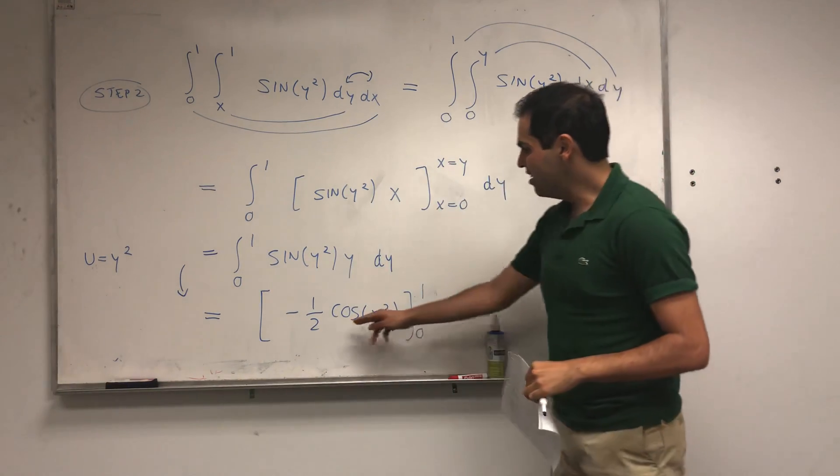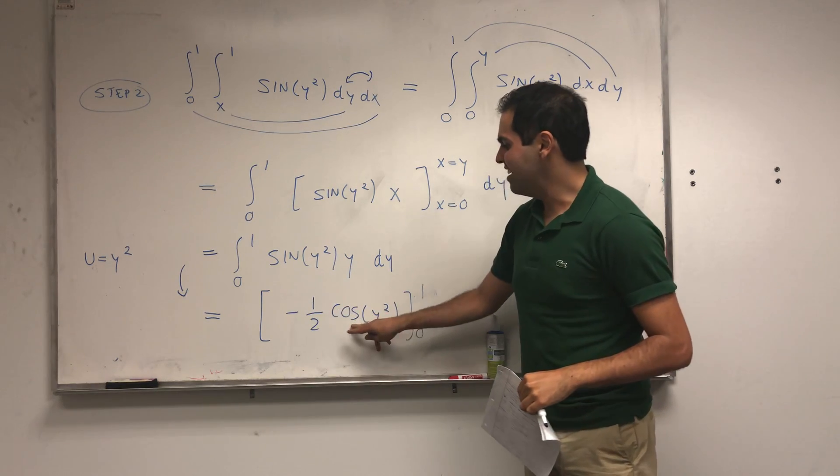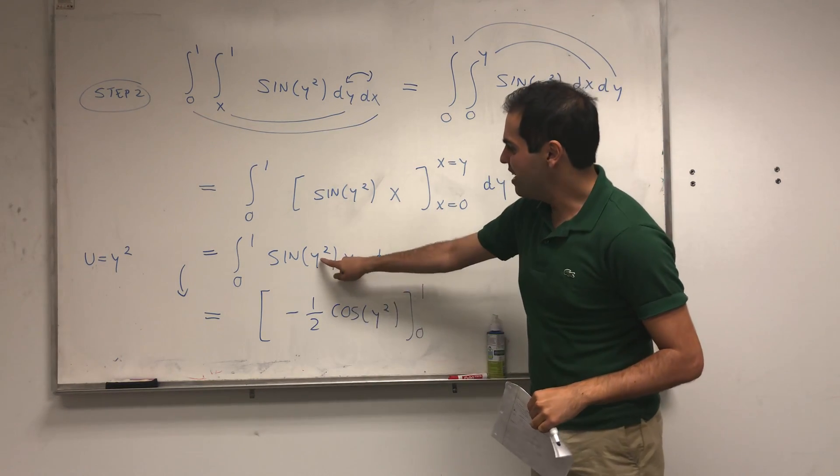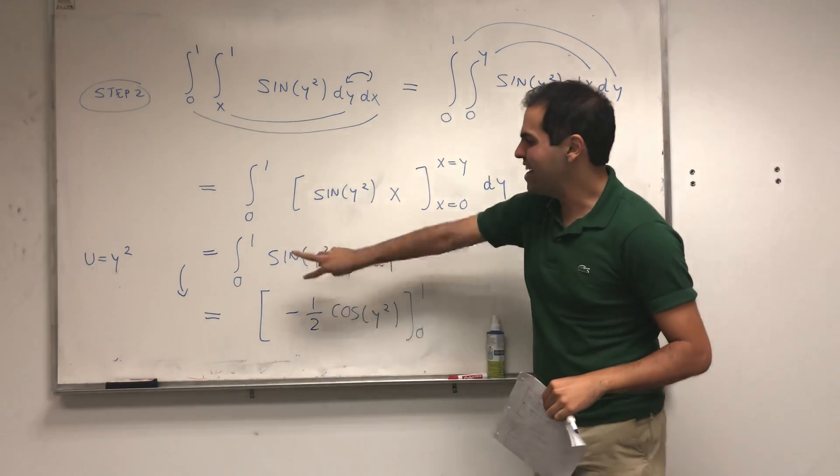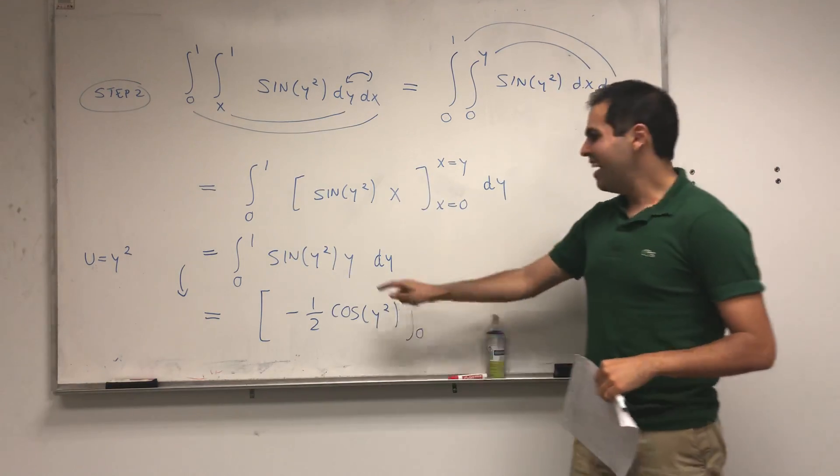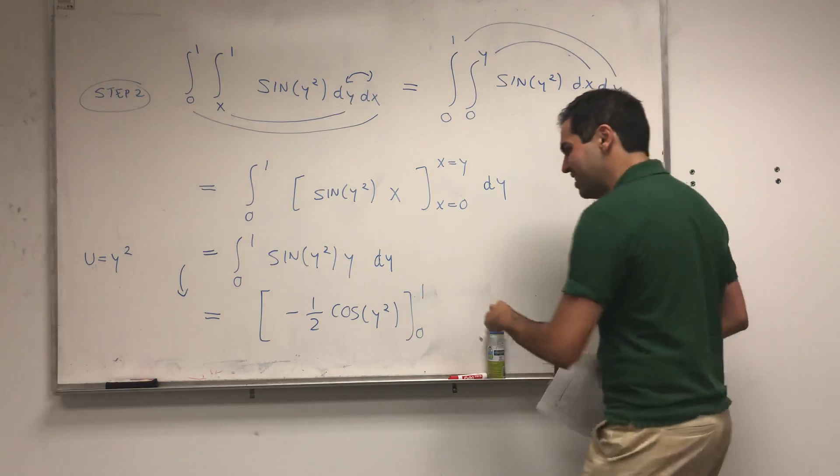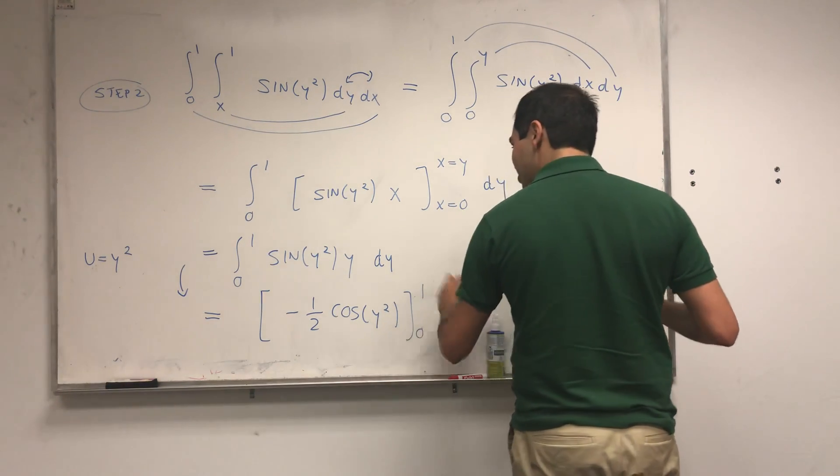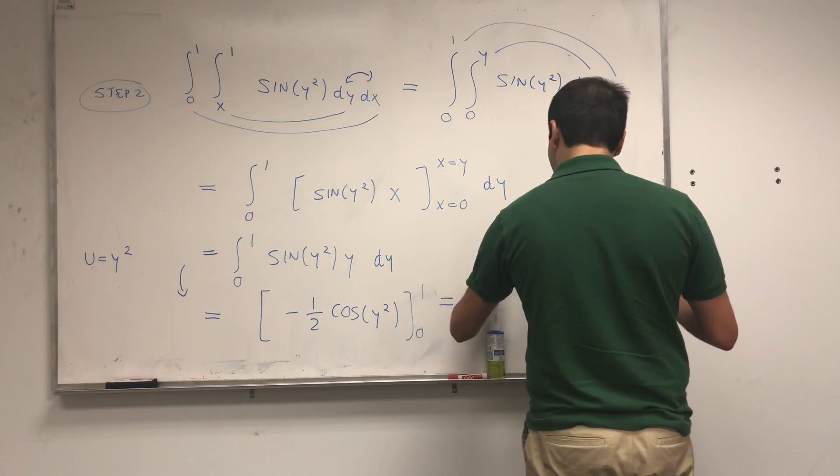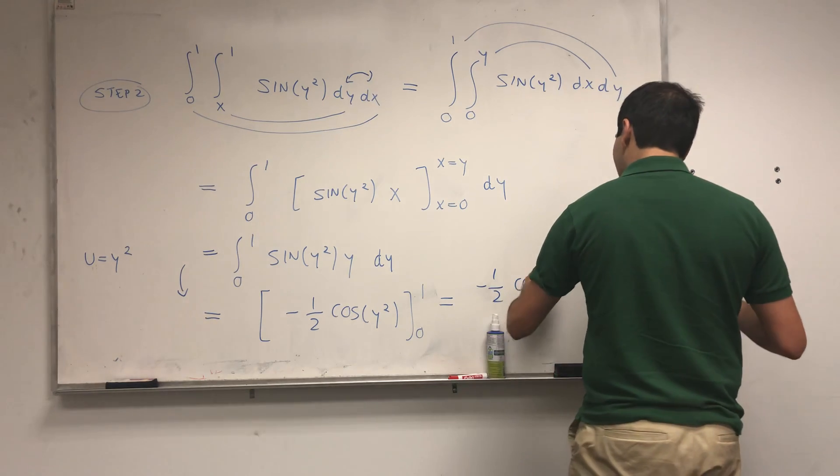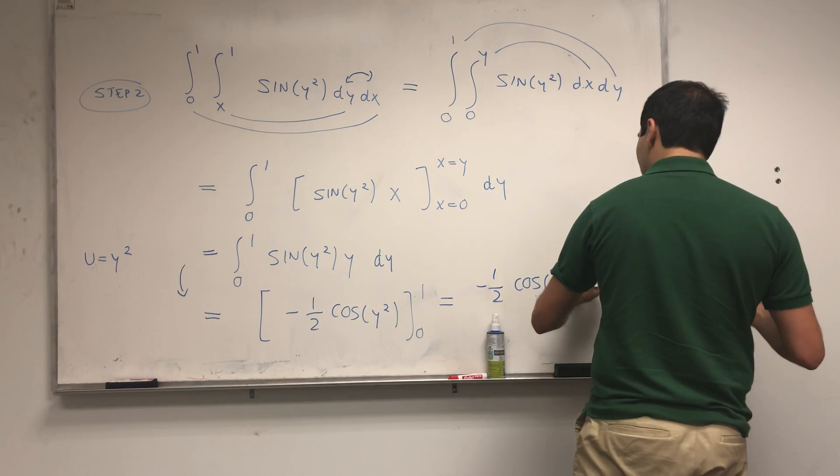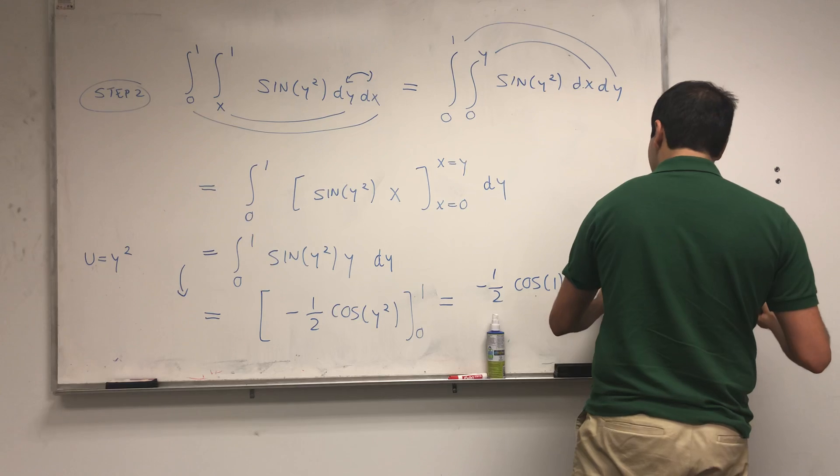Because you know anti-derivative of sine is minus cosine, but if you differentiate y squared you have a two y, and to get rid of you know that two you just divide by two here. And then in the end you do get minus one half cosine of one plus one half cosine of zero.